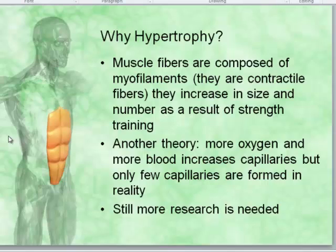Hypertrophy is the opposite of atrophy. When we put stresses and forces through muscles, the body reacts and gains. Muscle fibers are composed of myofilaments — the contractile fibers within the muscle — and these increase in number with strength training. Another theory involves more oxygen and blood increasing capillaries, but research shows only a few capillaries are actually formed. So the majority of hypertrophy comes from increasing the myofilaments themselves.